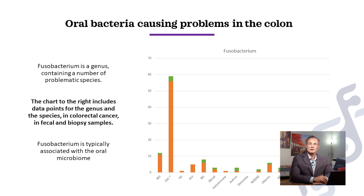It is thought that Fusobacterium translocates to the colon either by traveling down the GI tract or through the blood. There are many oral activities such as dental surgery, scaling and cleaning at the dentist, flossing and brushing at home, and even chewing food, which have all been associated with transient bacteremia — a spike in bacteria in the blood. Once Fusobacterium is in the colon, it initiates a slew of bad activities.